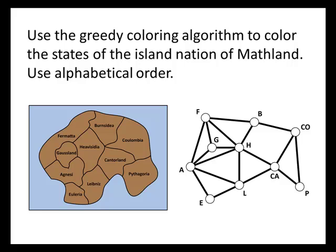So our graph is going to look a little something like this. Notice that four states — BH, CA, and CO — on the map all appear to meet at a single point. By convention, we don't worry about states that meet only at a point. So we're not going to connect BH to CA by an edge, and we're not going to connect H to CO by an edge, since they only share that single point, which doesn't count as sharing a border using our rule of thumb.